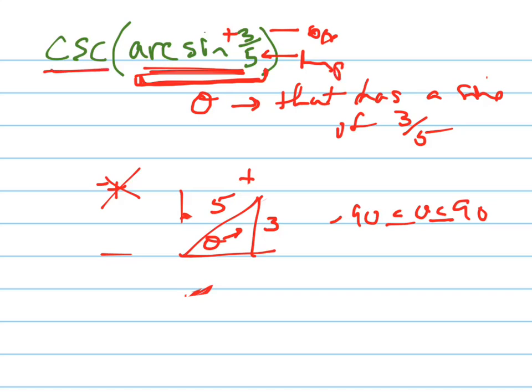So now what they're asking is, what's the cosecant of that angle? Well, the cosecant of an angle is just the reciprocal of the sine. So the cosecant would be five-thirds, because it's the hypotenuse over the opposite. So your answer for the cosecant of the arc sine of three-fifths is five-thirds. Let's try a different one.